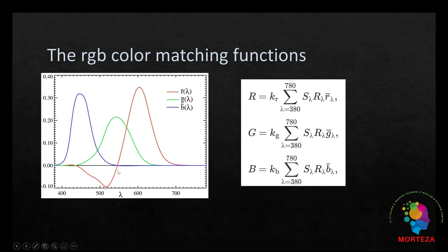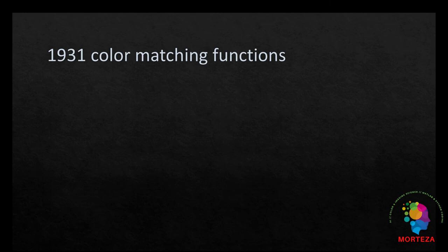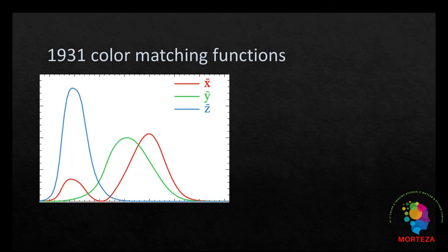But as it can be seen, the red primary has some negative value, which makes it unrealistic. Therefore, a linear transform was derived to transform these set of primaries to one that has no negative value. CIE called this transformed set of primaries spectral tristimulus values of the CIE 1931 standard observer, or color matching functions of the CIE 1931 standard observer. They are shown here.